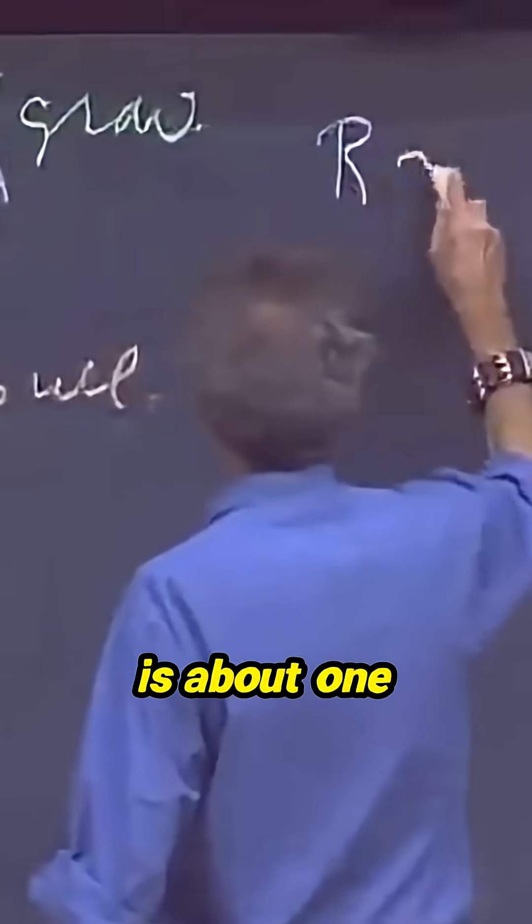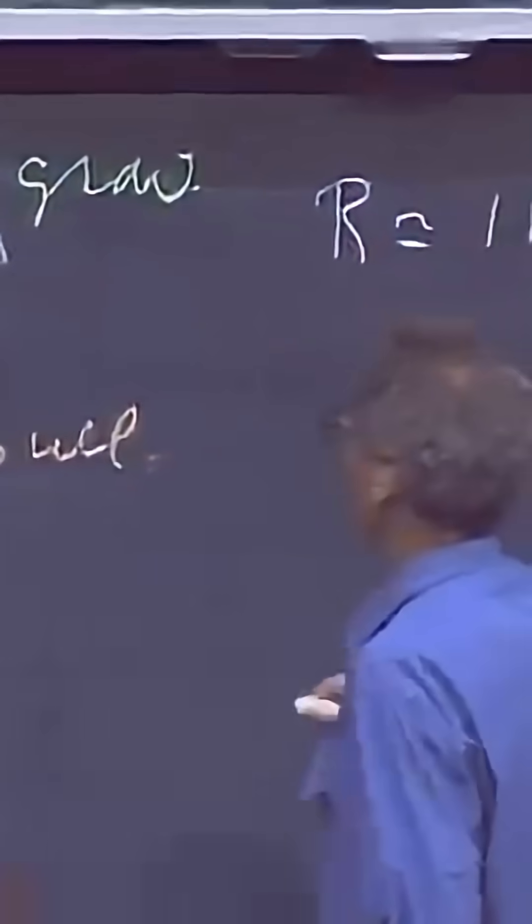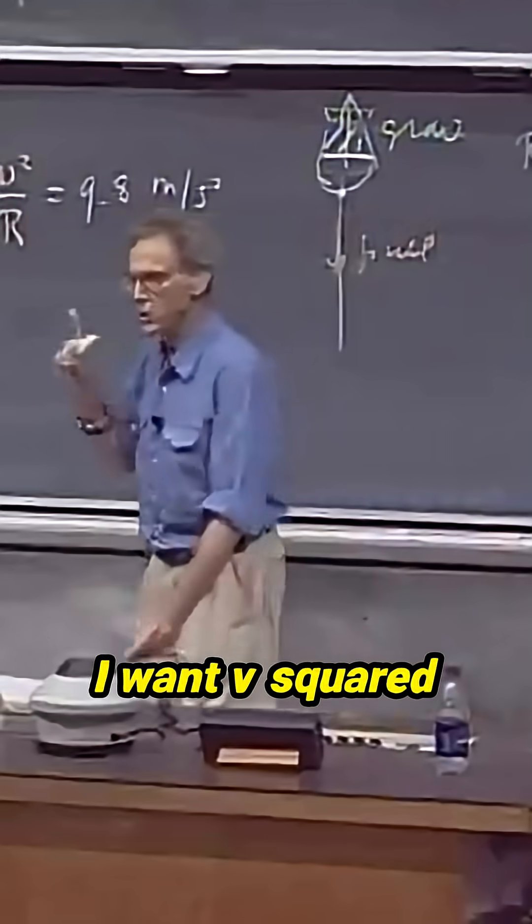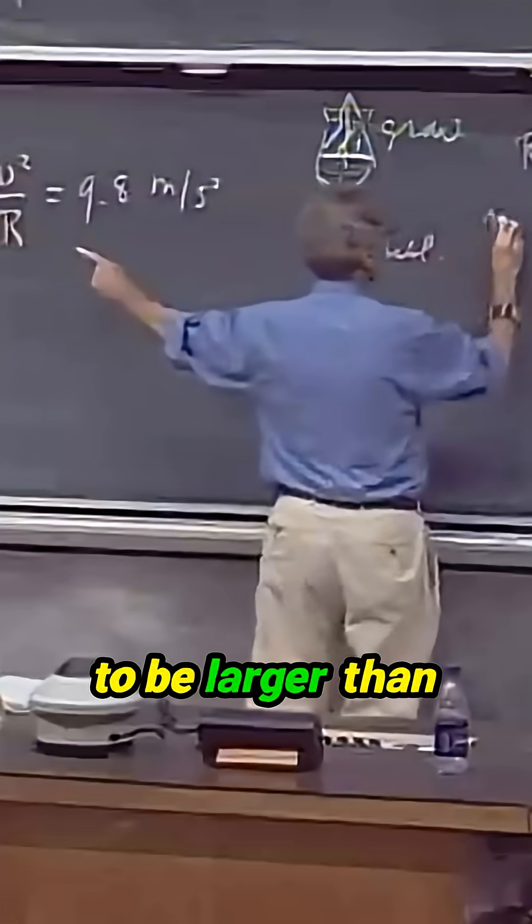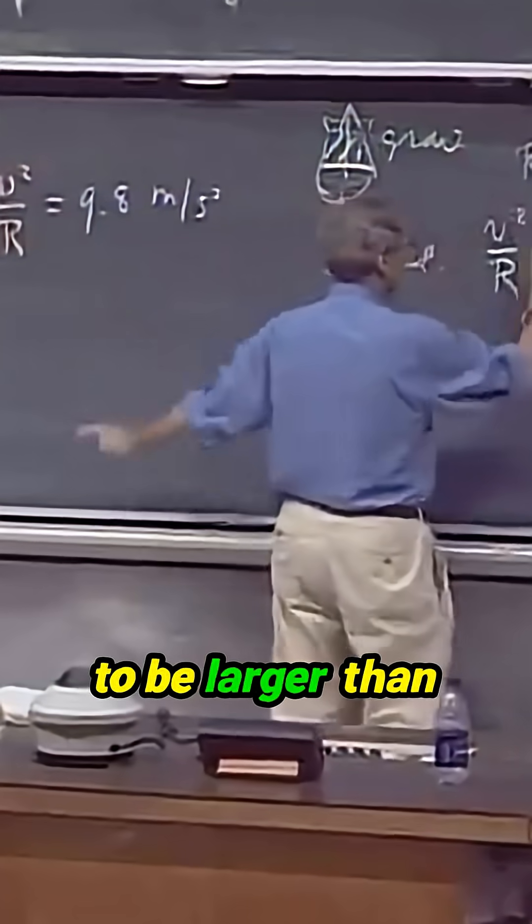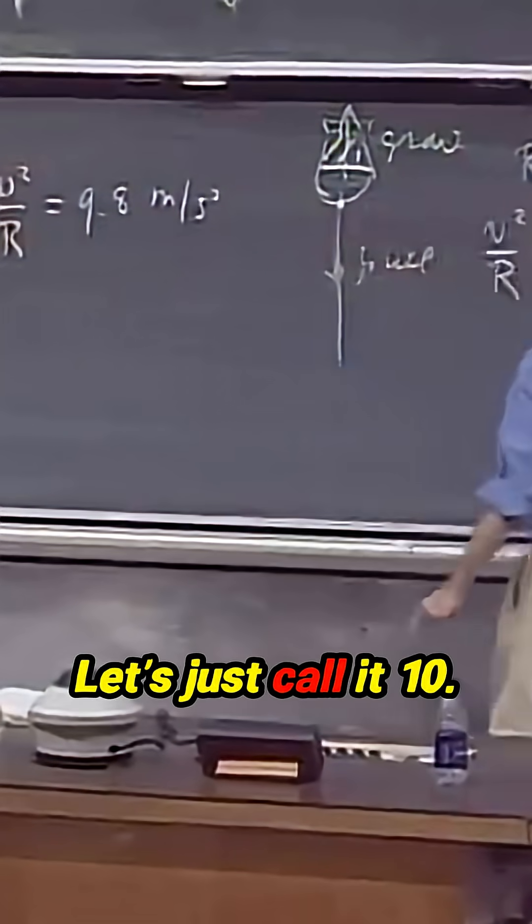So r is about one meter. And I want v squared over r, I want that to be larger than 9.8. Let's just call it ten.